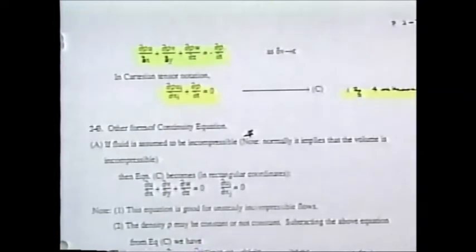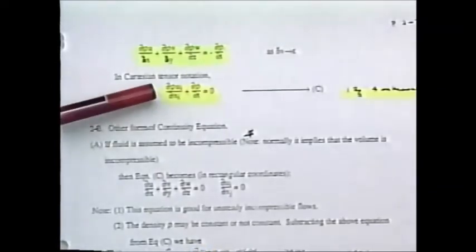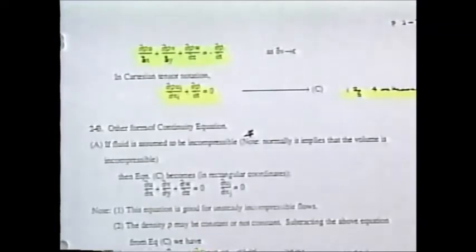For those unfamiliar with Cartesian tensor notation, check a tensor book. Don't be scared by the word tensor — we just borrow a shorthand notation. Nothing of full tensor theory is required. The subscript simply runs 1, 2, 3 for the Cartesian coordinate. If a given term has a repeated subscript, that means sum over index 1, 2, 3 — essentially the x, y, z components.